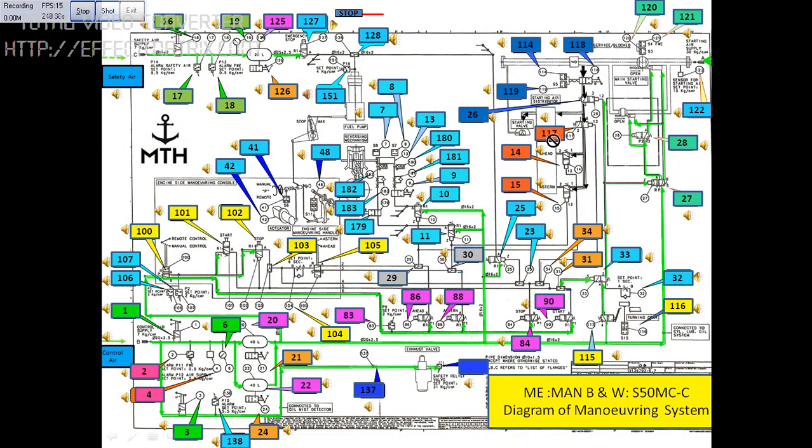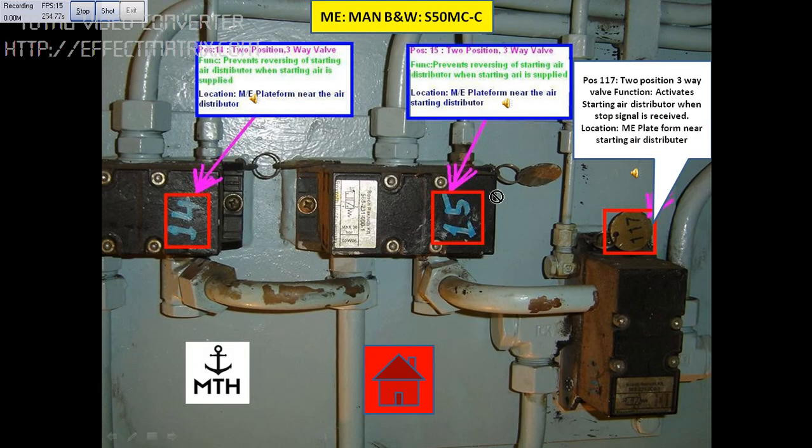So you can see different components here. Suppose you want to see 117, so you click here 117. So you can see the components are here 117 and there is an icon here you can click on this icon. This block is position number 117 which is a 2-position 3-way valve. The function of this valve is to activate starting air distributor when stop signal is given. Location: main engine platform near the air distributor.